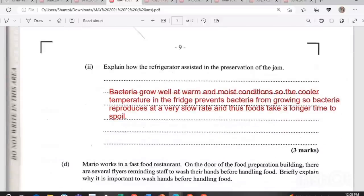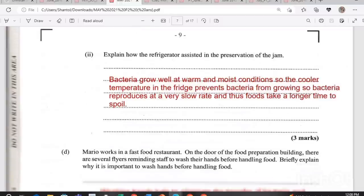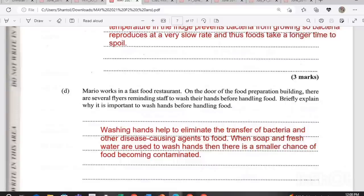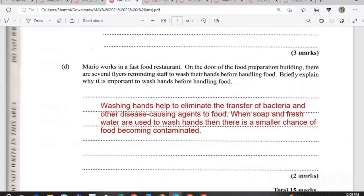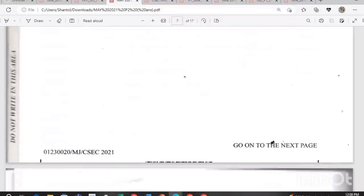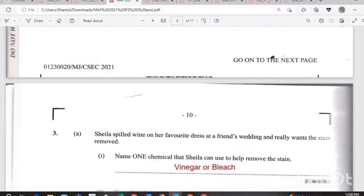Mario works in a fast food restaurant. On the door of the food preparation building, there are several flyers reminding staff to wash their hands before handling food. Briefly explain why it is important to wash hands before handling food. Washing hands help to eliminate the transfer of bacteria and other disease causing agents to food. When soap and fresh water are used to wash hands, then there is a smaller chance of food becoming contaminated. Washing hands get rid of germs, bacteria, if you said those things then you would be able to get your two marks. That's 15 marks for that question.